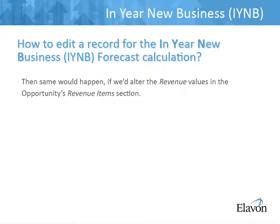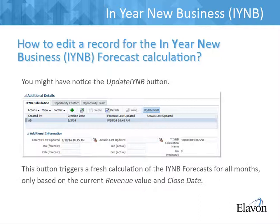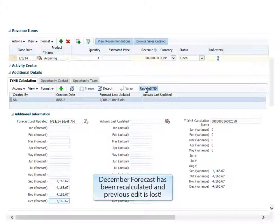The same would happen if we had altered the revenue values in the Opportunity Revenue Items section. You might have noticed the Update IYNB button. This button triggers a fresh calculation of the IYNB forecasts for all months, only based on the current revenue value and close date. It will also overwrite all previous edits, so you should not click it after you have altered any values in your forecast. In our example, the December value we edited to 5,000 earlier has been reset to the automatically assigned value of 4,166.67, the same as for the other months.